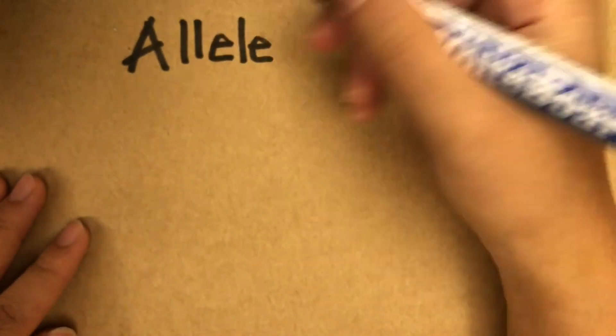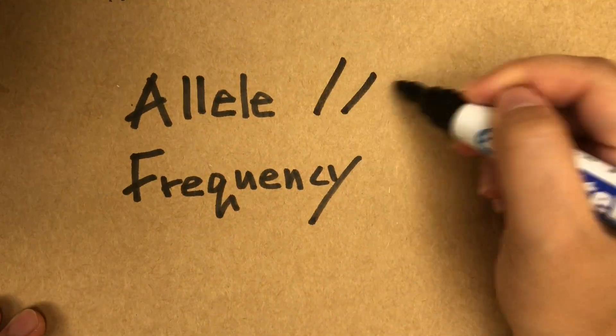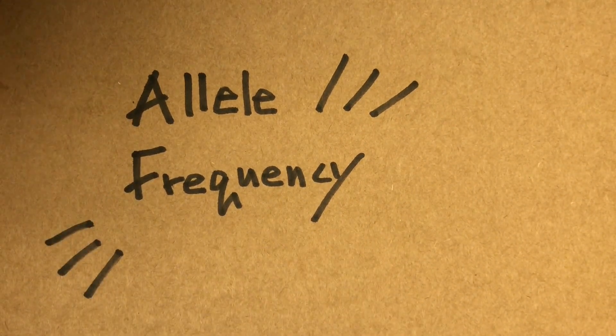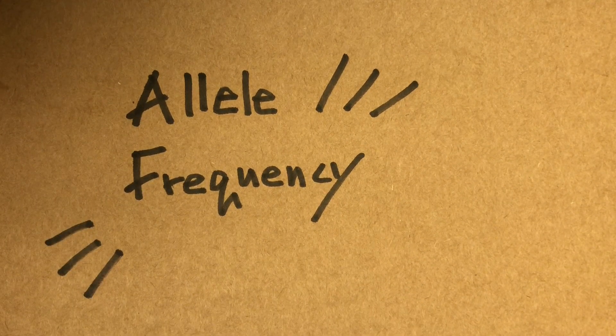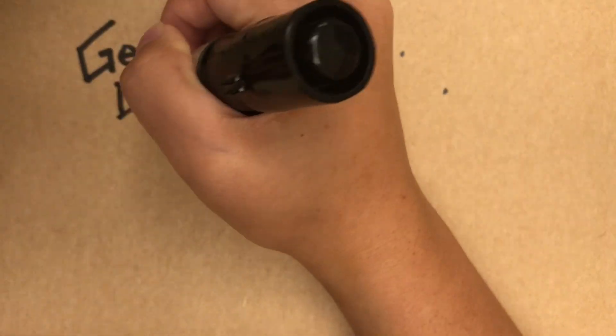Allele frequency is kind of an important term here. It literally means the frequency of an allele that occurs in the gene pool. Easy peasy. As we've already learned, natural selection causes the allele frequency to change. Genetic drift is the fancy term for that.